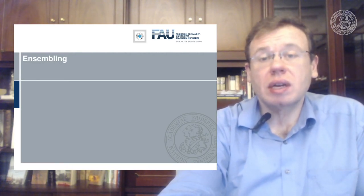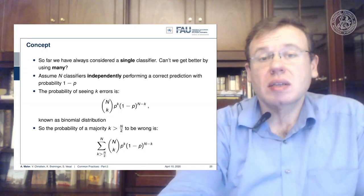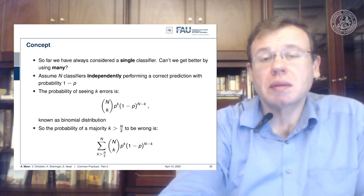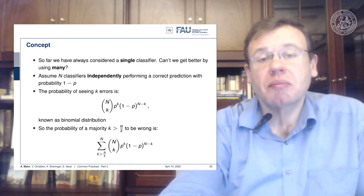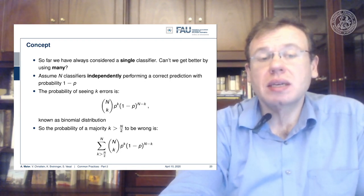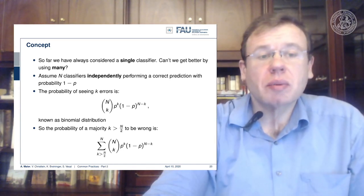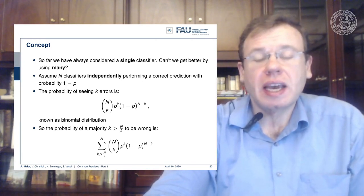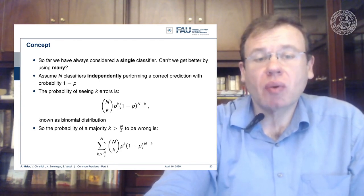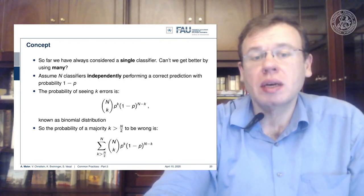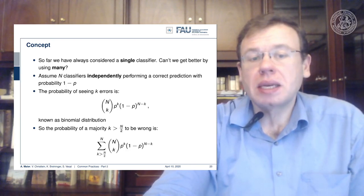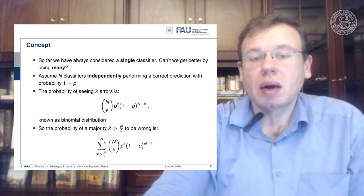A very common technique that can give you a little boost of performance is ensembling. So far we have only considered a single classifier, but ensembling uses many classifiers. If we assume n classifiers that are independent, performing a correct prediction will be at a probability of 1 minus p. The probability of seeing k errors is n-choose-k times p to the power of k times (1 minus p) to the power of (n minus k) — this is a binomial distribution. The probability of a majority (k greater than n over 2) being wrong is the sum over n-choose-k times p^k times (1-p)^(n-k).